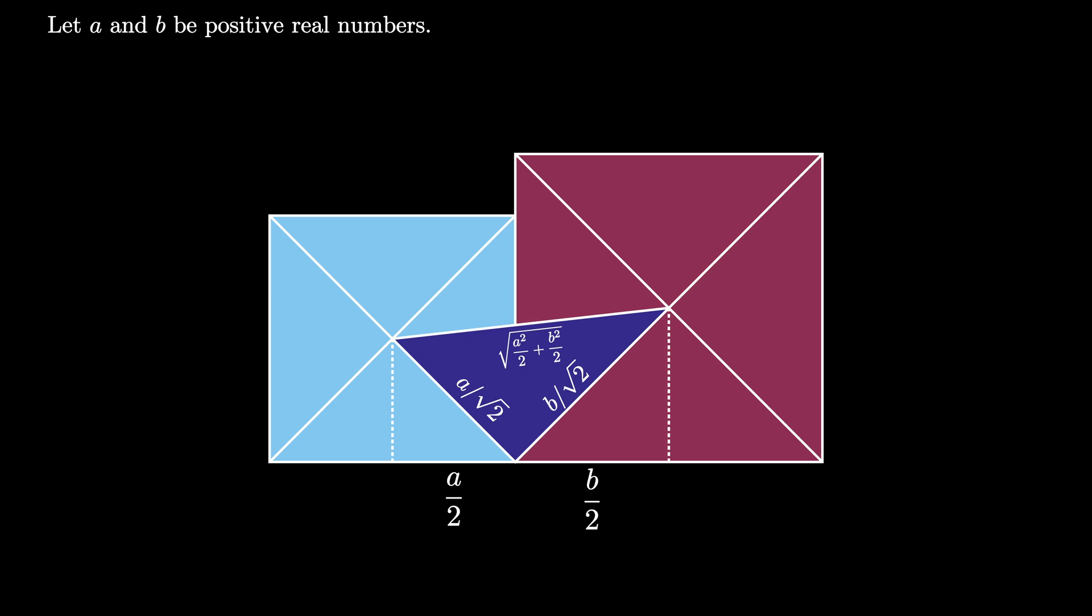The two isosceles right triangles and the shaded purple triangle create a trapezoid. From this trapezoid we see that the one side length given by A over 2 plus B over 2 is less than or equal to the longer side length which is given by the square root of A squared over 2 plus B squared over 2.